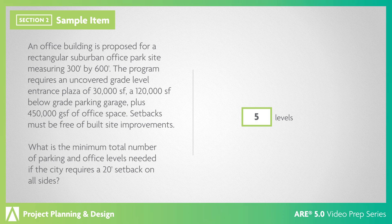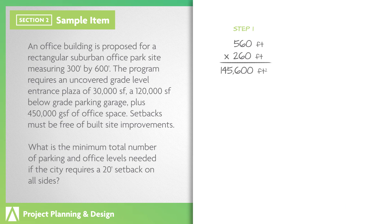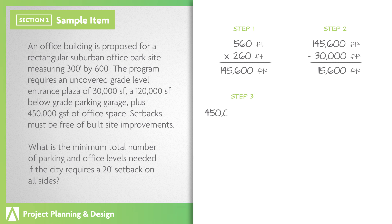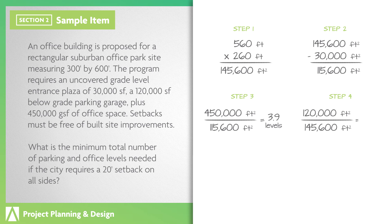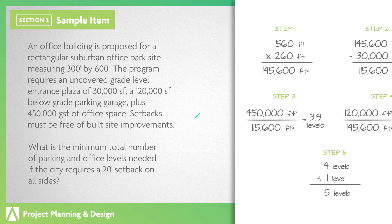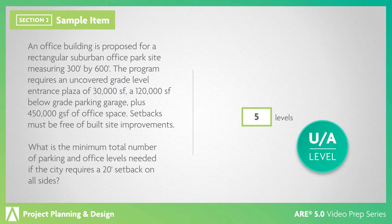The correct answer is 5. You'll first need to calculate the buildable areas. The below-grade buildable area equals the surface area of the site reduced by the required setbacks. The above-grade buildable area equals the below-grade area reduced by the required plaza. Next, you'll calculate the number of levels required to accommodate the office space, found by dividing the total office area by the above-grade buildable area. Finally, you'll calculate the number of levels required to accommodate the parking garage, found by dividing the total parking area by the below-grade buildable area. Remember that all partial levels should be rounded up to the nearest whole number. Add the above-grade and below-grade levels together to find the total answer. This is a UA-level item requiring an understanding of zoning setbacks and building massing.